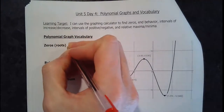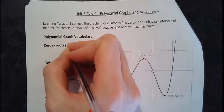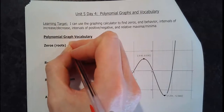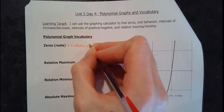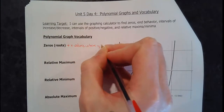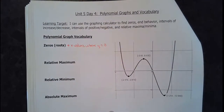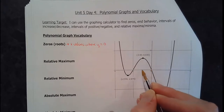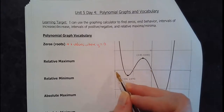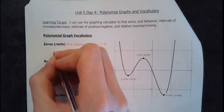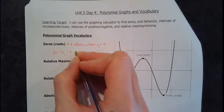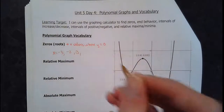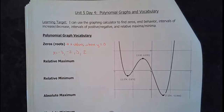The zeros, roots, or x-intercepts all mean the same thing. These are the x-values where y equals 0. On this graph, looking at it closely, the zeros are at x equals negative 3, negative 2, 0, and also 2. Those would be the zeros of this function just by looking at the graph.